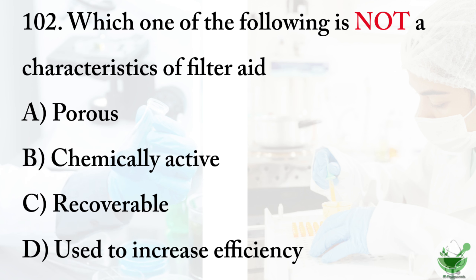Question number 102: Which one of the following is not a characteristic of filter aid? Option A: porous. Option B: chemically active. Option C: requireable. Option D: used to increase efficacy. The correct option is option B, chemically active.